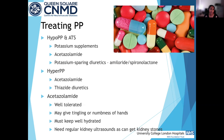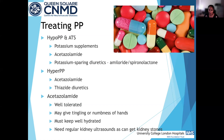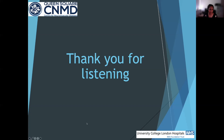For hypokalemic periodic paralysis and Andersen-Tawil syndrome, we often give potassium supplements during attacks and may prescribe acetazolamide to prevent them. If those don't work, we might use amiloride or spironolactone, which are potassium-sparing diuretics. For hyperkalemic periodic paralysis, we use acetazolamide first line and may add thiazide diuretics. Acetazolamide is well tolerated but can cause tingling and numbness in the hands; it's important to stay hydrated and have regular kidney ultrasounds, as a small proportion of people on high doses long-term develop kidney stones.